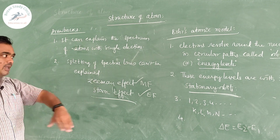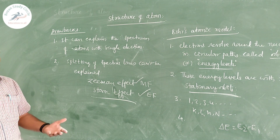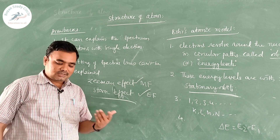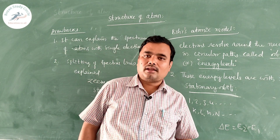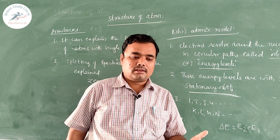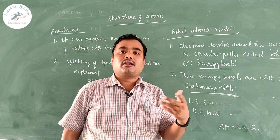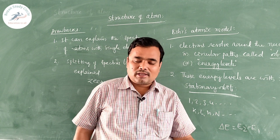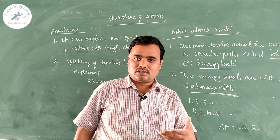So there are drawbacks. Again to explain these drawbacks, one more scientist called Sommerfeld came forward with Sommerfeld's model. In the next class, we will explain Sommerfeld's model and also come across the quantum mechanical model, quantum numbers — which give the complete address of the electrons — and how we can write the electronic configuration of the elements. The remaining part of the chapter will be explained in the next session. Thank you and stay tuned.